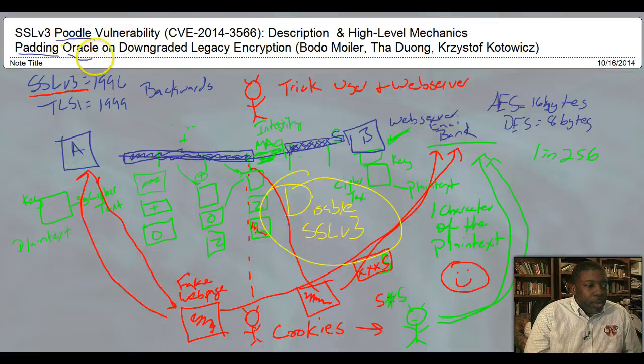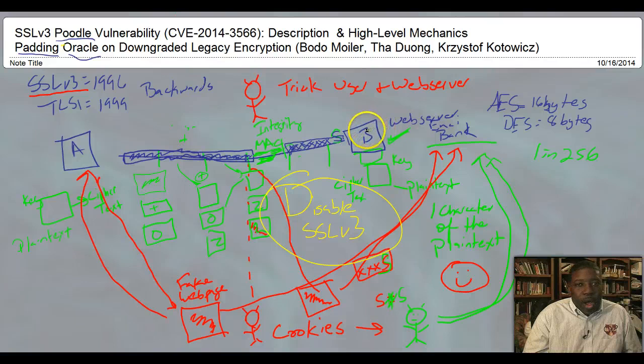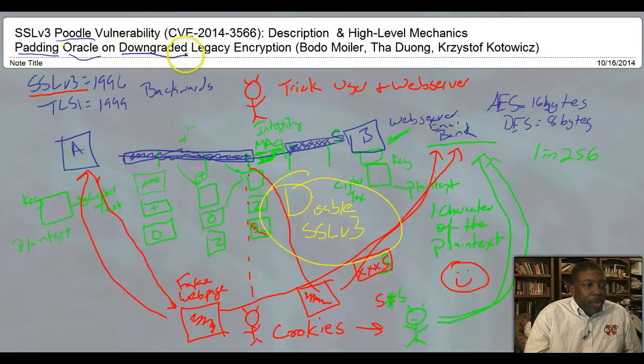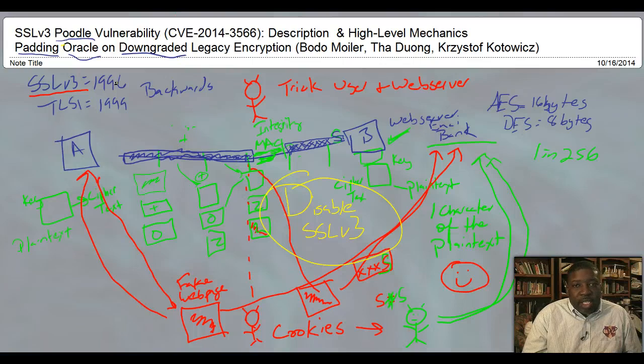Oracle - that's the web server. The web server is always looking, seeing, all-knowing. That's the Oracle. Downgraded - you have to downgrade your SSL for this attack to take place.